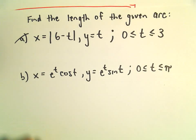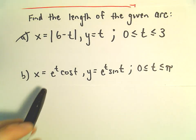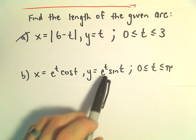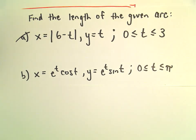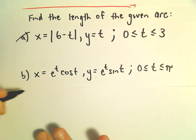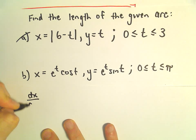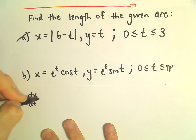In this video we're going to do another example of finding an arc length of a parametric curve. In part B, x is given by e to the t times cosine t, and y is e to the t times sine t. The first thing I'm going to start doing is just taking derivatives and squaring things.